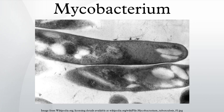Scotochromogens produce deep yellow to orange colonies when grown in either light or dark conditions — examples include M. scrofulaceum, M. gordonae, M. xenopi, and M. szulgai.